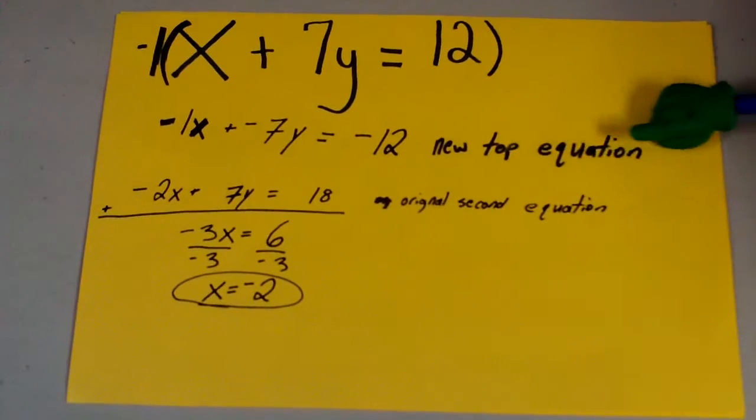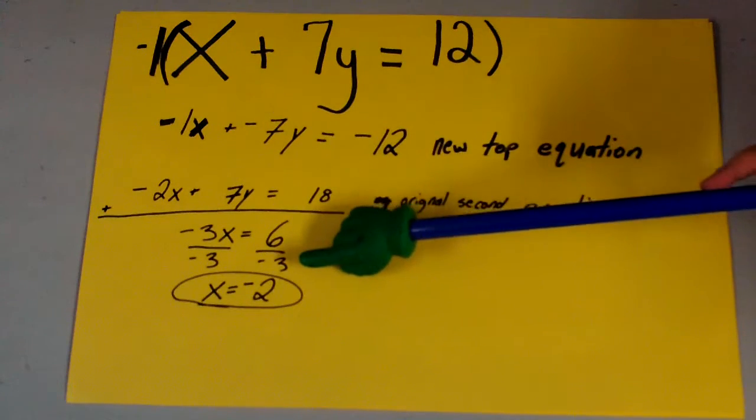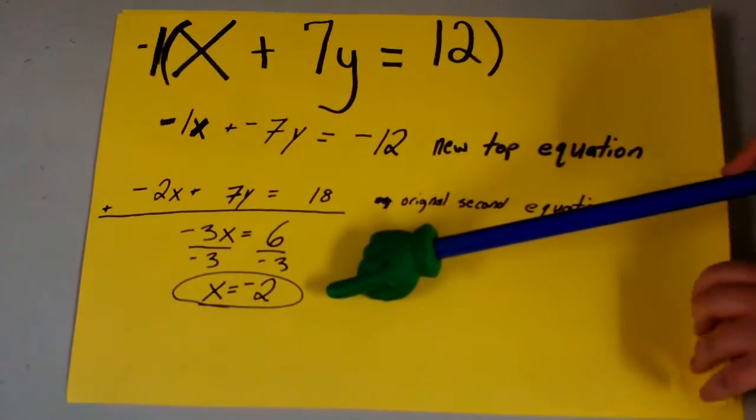Next you will add down to get negative 3x equals 6, and then you will divide both sides by negative 3 to get x which equals negative 2.